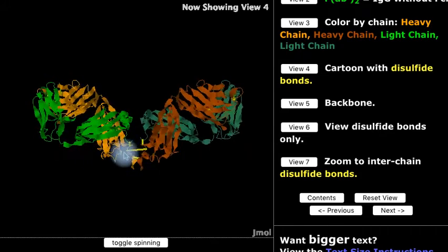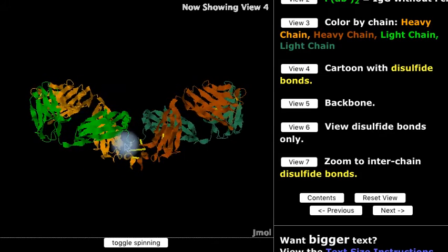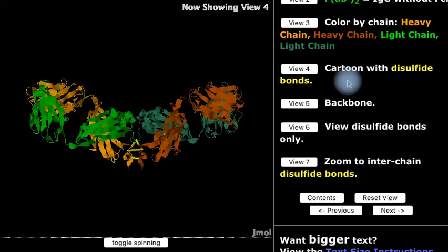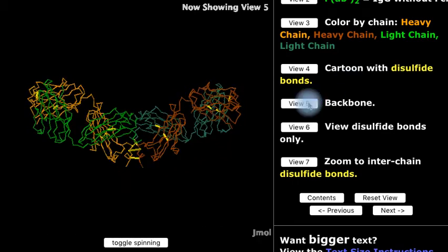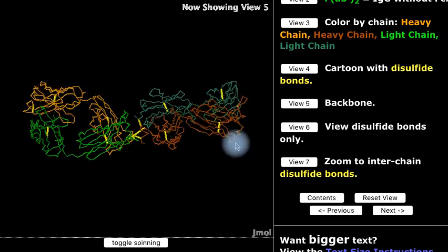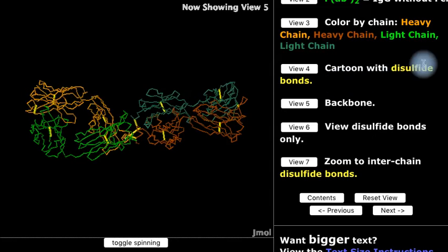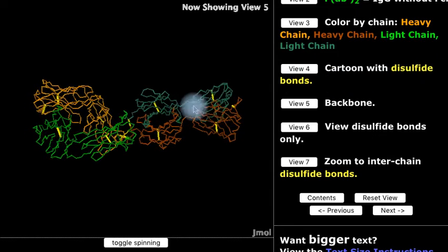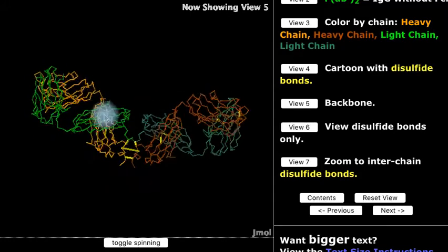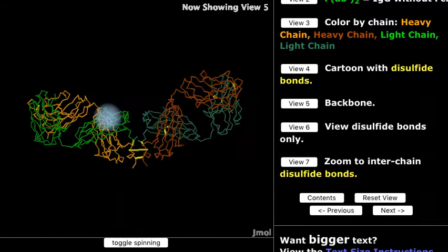There are four disulfide bonds at this position. Two of them attach the heavy chains to the light chains, and the other two attach the two heavy chains together, holding the whole assembly into one piece. And FAB'2 contains eight immunoglobulin domains, each of which contains one disulfide bond.